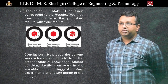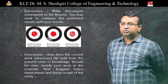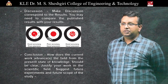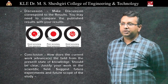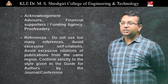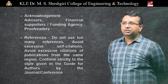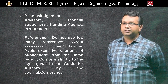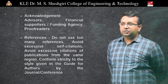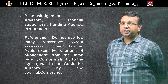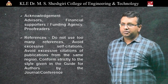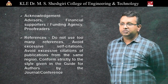You may also need to compare your results with published results. Then comes the conclusion — mention how the current work advances the field from the present state of knowledge. This should be clearly written. Justify your work in the scientific field and suggest future experiments and future scope. Then comes the acknowledgement, where you can acknowledge advisors and any funding agencies. Lastly, references are very important — do not use too many, avoid excessive self-citations, avoid excessive citations from the same region, and conform strictly to what the journal or conference requires.